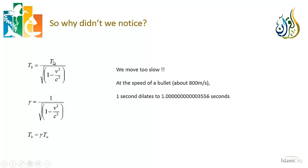If TB equals TA over this square root, and V is small compared to C — which even the speed of a bullet is — then V squared over C squared becomes a very, very small number, extremely close to zero. So it is as if we are dividing TA by 1, and so TB equals TA — everybody gets the same time. That is why it seemed to Galileo and to Newton that time was absolute: if you're moving at a speed small compared to the speed of light, then TA over the square root is essentially TA over 1, so TB equals TA, and we all get the same measurement of time at a practical level.